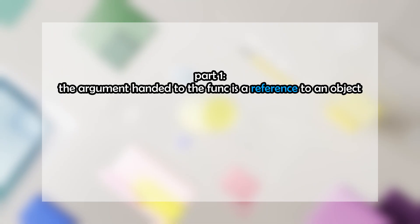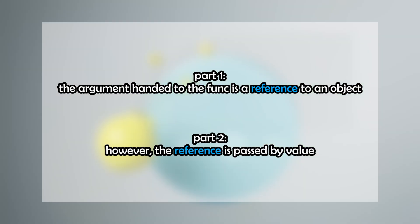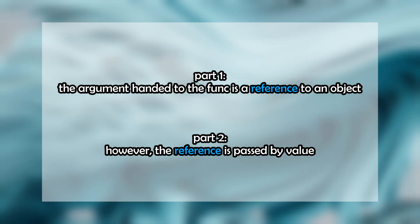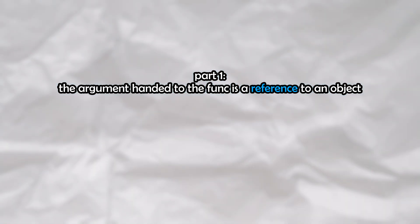The argument that you hand to the function is a reference to an object, however, this reference is passed by value. This might sound confusing, but bear with me. The first part of what I said is that the argument being passed is a reference to an object. Keep in mind that in Python, everything is an object.